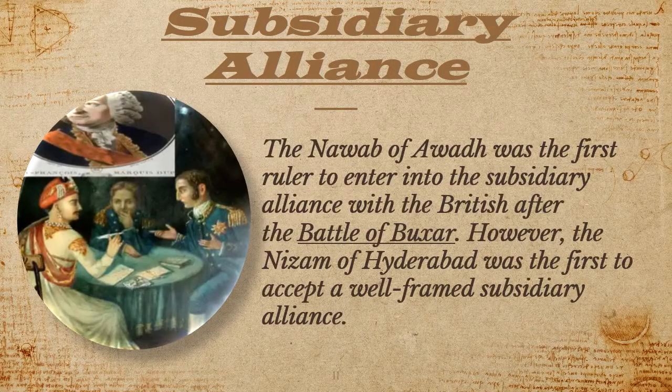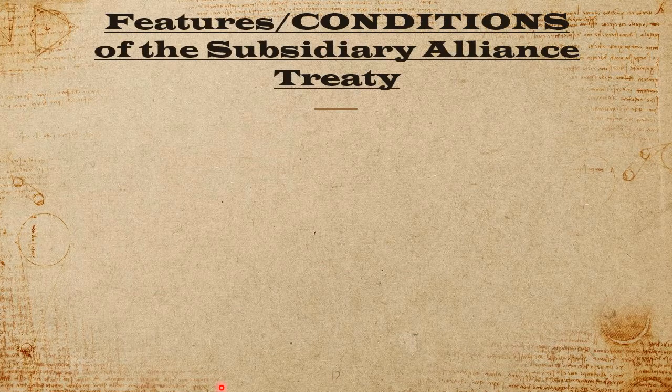The Nawab of Awadh was the first ruler to enter into the subsidiary alliance with the British after the Battle of Buxar. However, the Nizam of Hyderabad was the first to accept a well-framed subsidiary alliance. The Indian ruler had to accept certain terms and conditions under this arrangement.